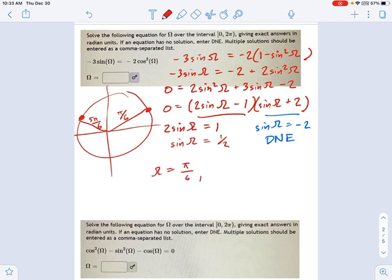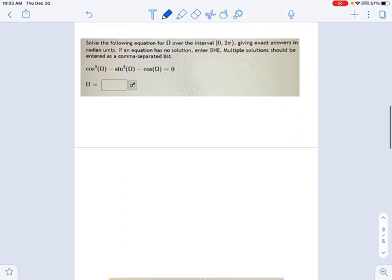Pi over 6 and 5 pi over 6. And see, the only challenge to this problem, assuming you know your beginner trig equation stuff, is seeing that identity, that Pythagorean identity substitution that we made right here. This was the big breakthrough moment.